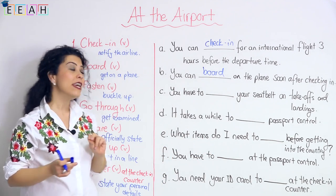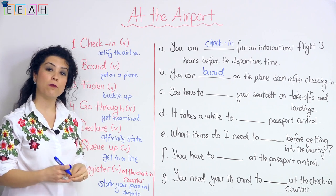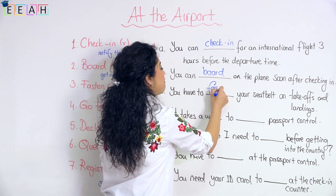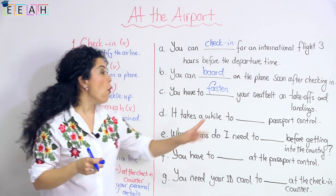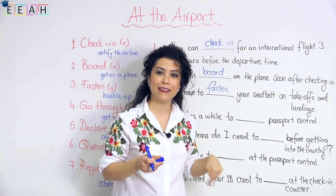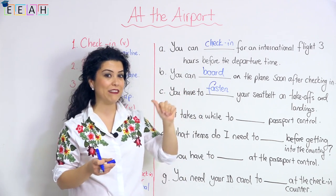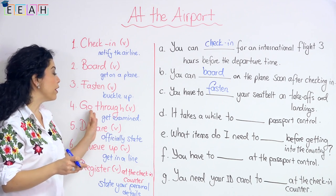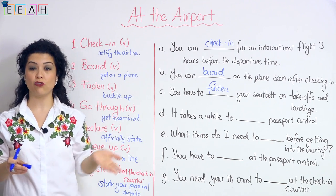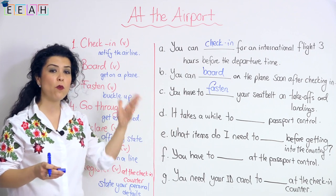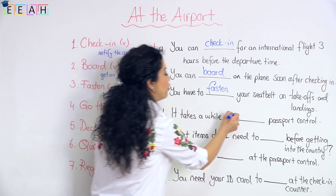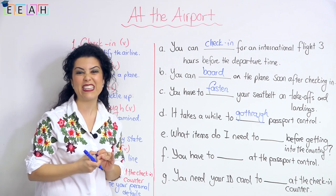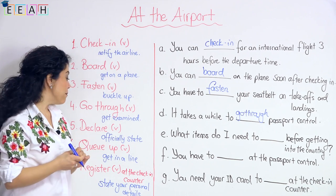Number three: 'to fasten' — to buckle up, to tie your seat belt. For example: you have to fasten your seat belt on takeoffs and landings, as those are the more dangerous times. Next: 'to go through' means to get examined. For example, you go through security or go through passport control. It takes a while to go through passport control at the airport.